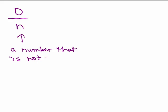So what we have is 0 divided by some number, and note, a number that is not 0. So, n is a number that is not 0, the answer will be 0. So 0 divided by any number that's not 0 is 0.